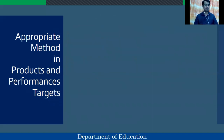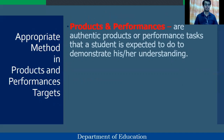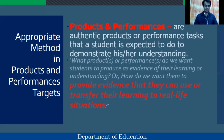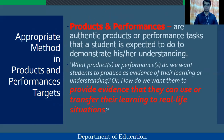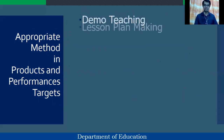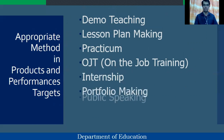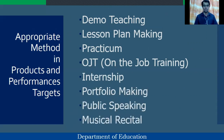Appropriate methods for products and performance targets involve authentic products or performance tasks that a student is expected to do or demonstrate to show understanding. What products or performances do we want students to produce as evidence of their learning? Examples include demo teaching, lesson plan making, practicum, on-the-job training, internship, portfolio making, public speaking, and musical recital.